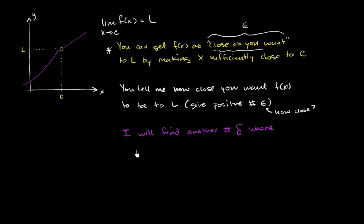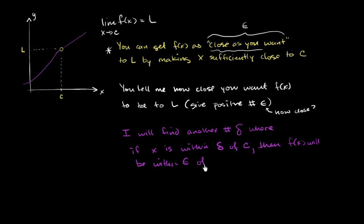Such that if x is within delta of c, then f of x will be within epsilon of our limit. So let's see if these are really saying the same thing. In the yellow definition, we said you can get f of x as close as you want to l by making x sufficiently close to c. This second definition is doing the same thing.